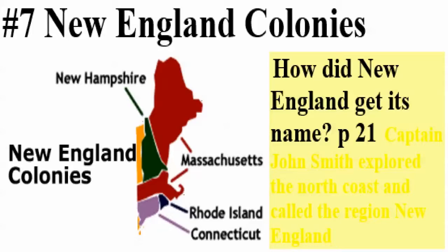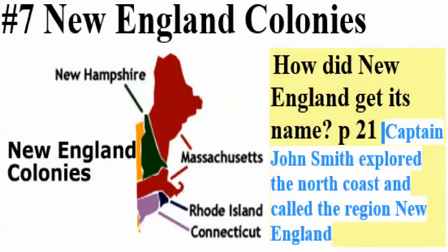This lesson is called the New England colonies. We know what a colony is — where people come and settle in an area for the first time. And New England is actually the name given to this area, named by John Smith. Write down this question: how did New England get its name? It goes from Connecticut, Rhode Island, Massachusetts, New Hampshire, and Maine — that's the area we call New England today. John Smith was the savior of the colony of Jamestown.